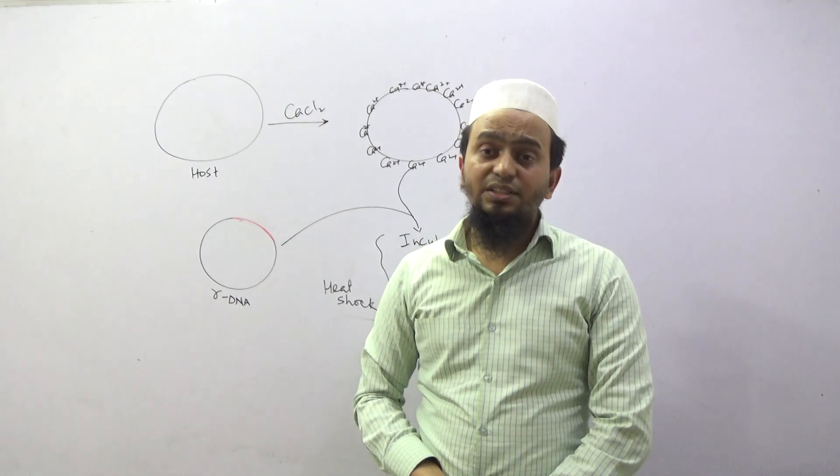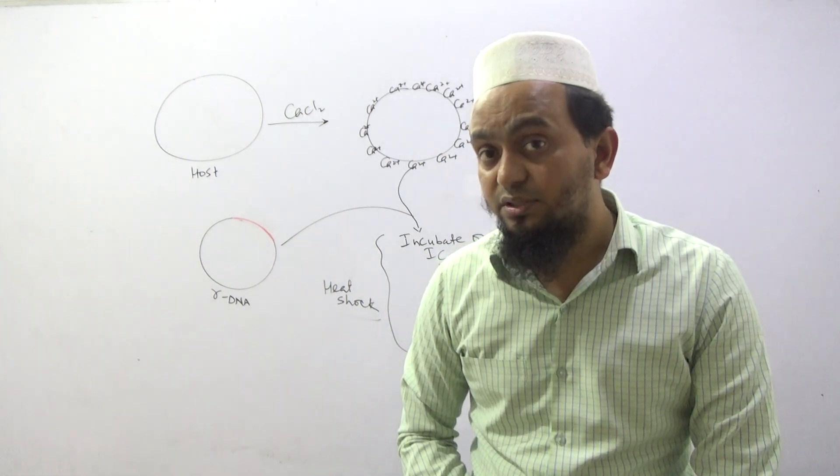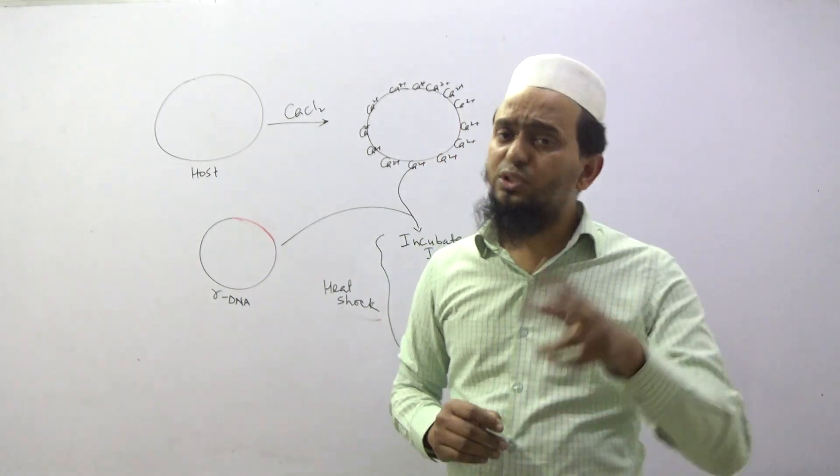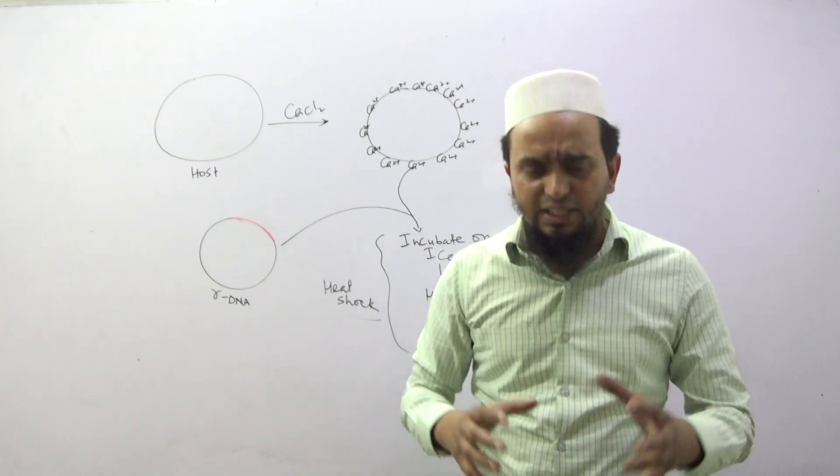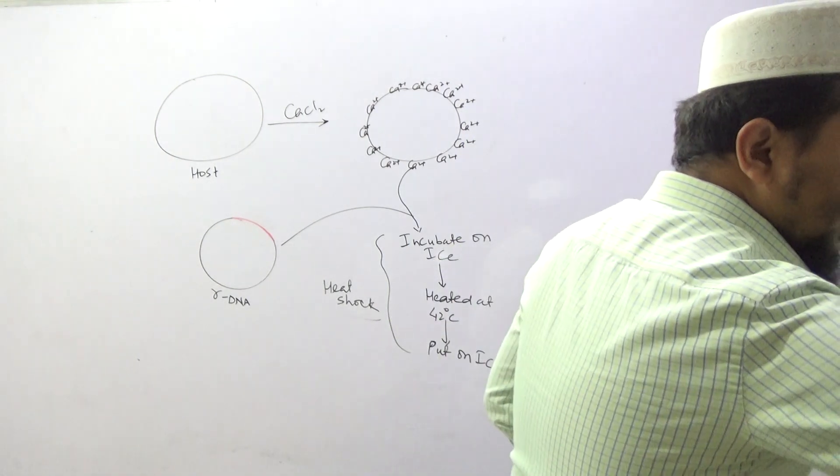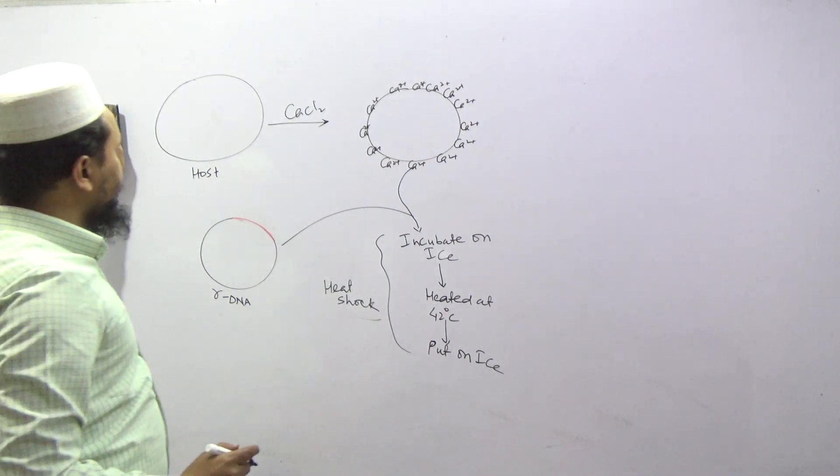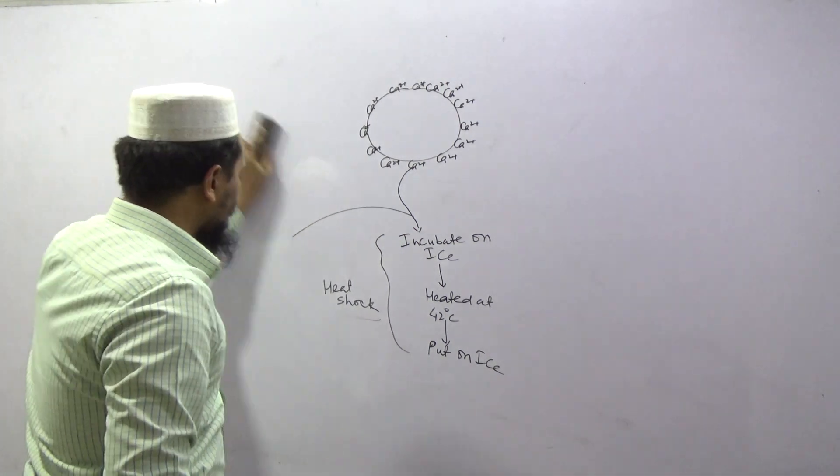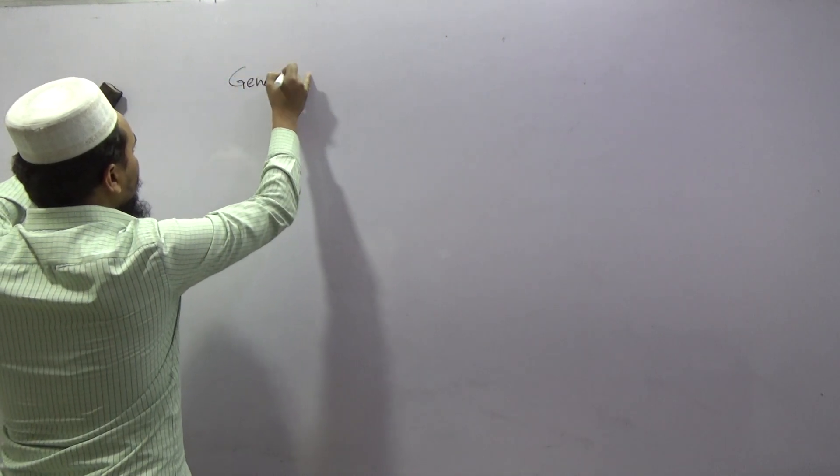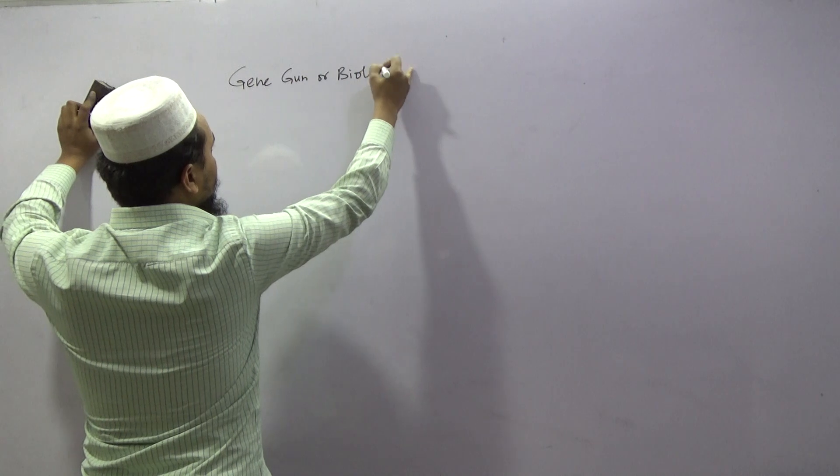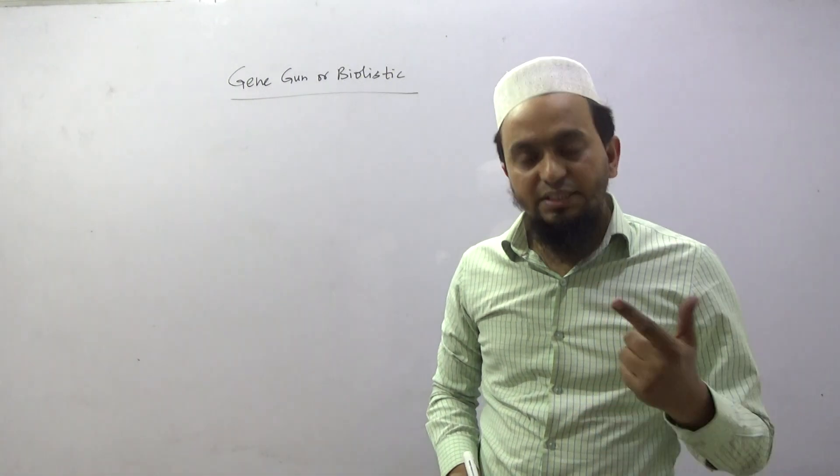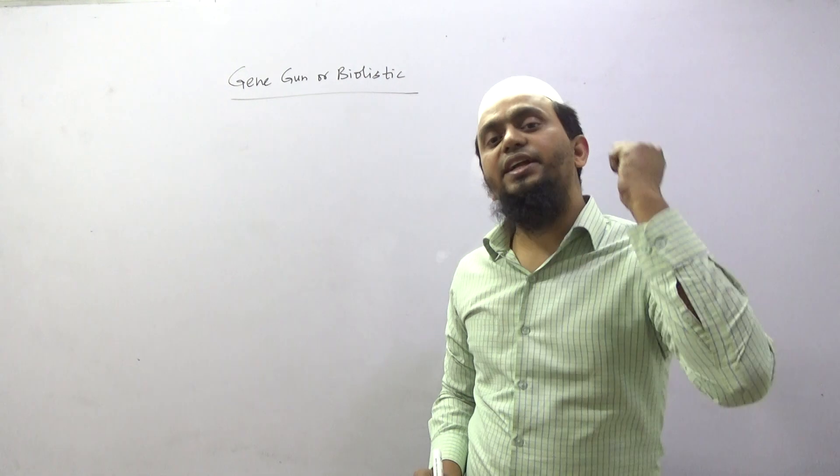But without cloning vector, we can insert DNA or gene of interest. Or without chemical method, we insert it. These are other ways. In the syllabus, there is the gene gun, which is biolistic. This gene gun or biolistic is an instrument that you can use to insert directly into the plant cell.